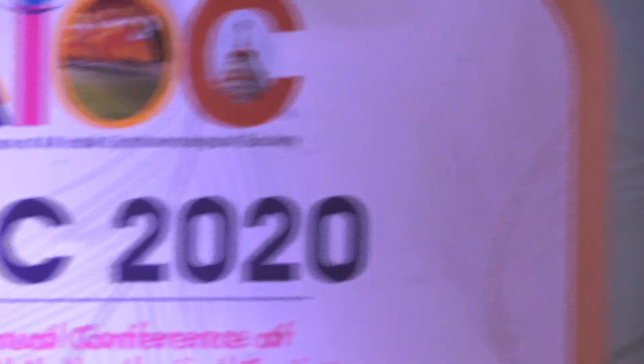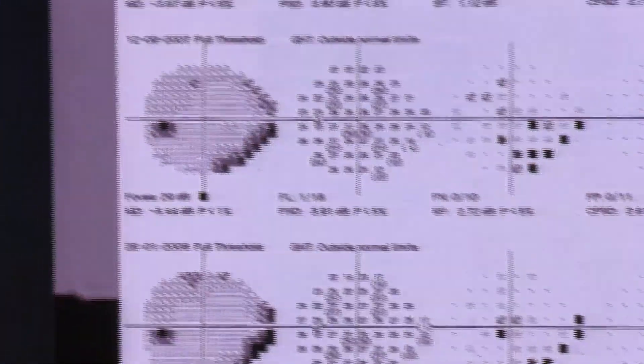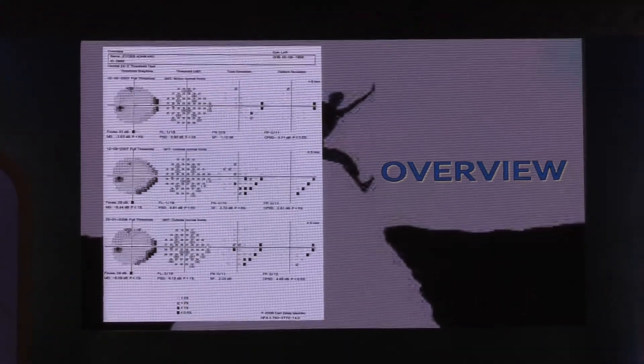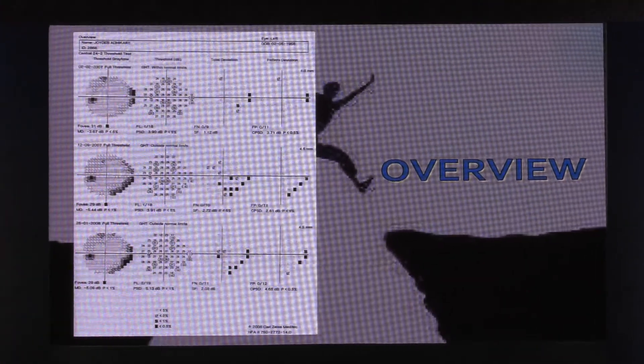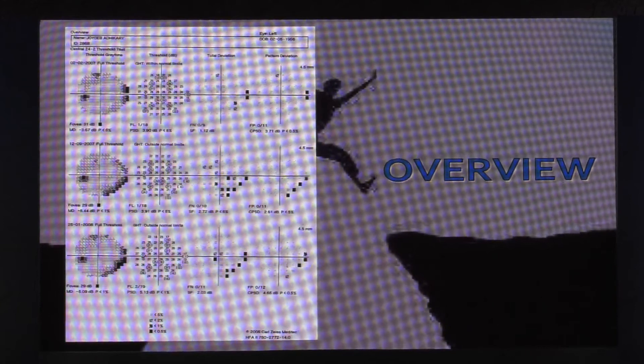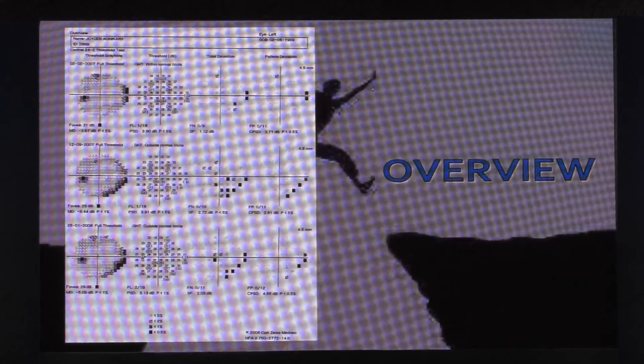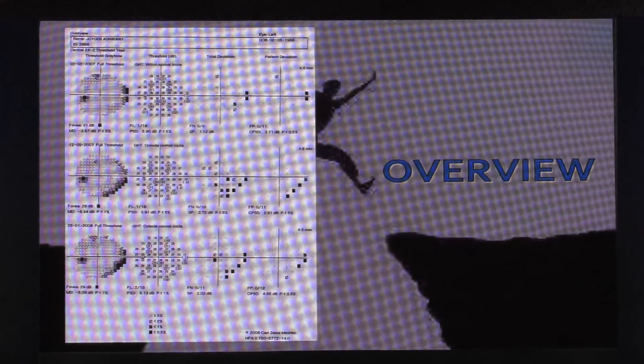To go through the overview in the Humphrey, if you look at those subsequent tests that were done six months apart or eight months apart, you actually see that the patient has progressed. Look at the PSD out there, 3.90, and then that's gone higher. I don't know whether it's very clear for you to see, but that is the overview that you see in the Humphrey.